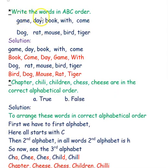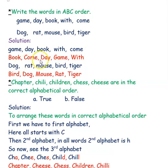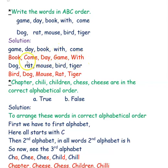Next example: write the words in ABC order. First set — gave, day, book, with, come. A is not there, so first is B — book. Then C — come. Then D — day. E and F are not there, so G — gave. Then W — with. The order is: book, come, day, gave, with. The next set: dog, rat, mouse, bird, tiger. In order: B — bird, D — dog, M — mouse, R — rat, T — tiger.